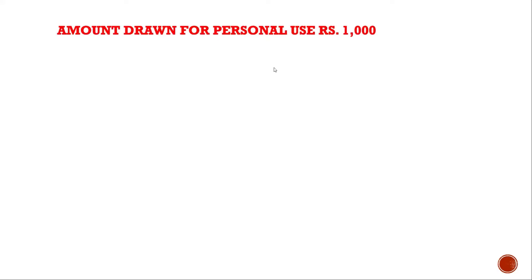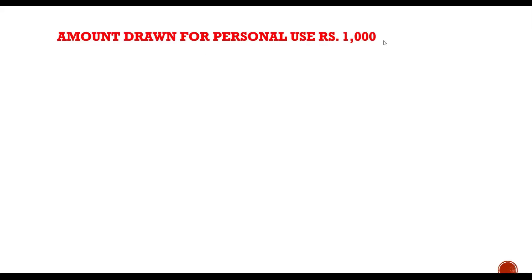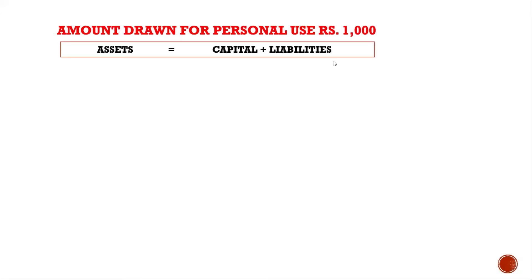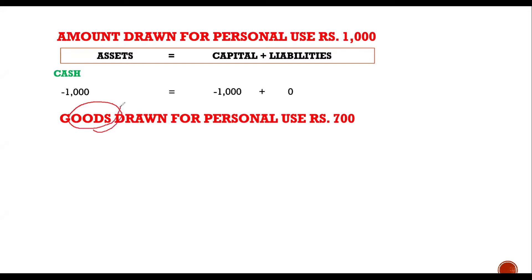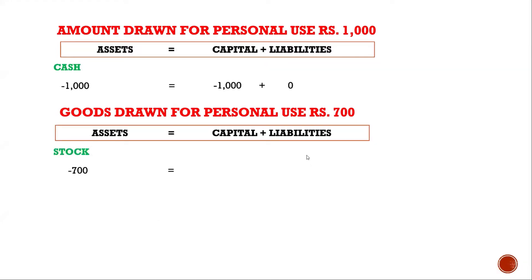Amount drawn for personal use: this is known as drawings. Drawings decrease the capital of the owner. When an amount is drawn, the business's cash falls. It's not always that a businessman withdraws cash — he might also withdraw goods. For example, if the owner of a stationery shop takes stationery for his son from the business, that is drawings. Stock of the business will fall and capital will also decrease without affecting liabilities.